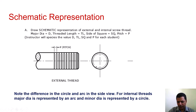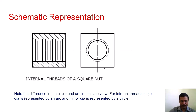The side view is the same as for the simplified representation: the outer circle is complete with a diameter equal to the major diameter, and the inside one is an arc with a diameter equal to the minor diameter. You can place the opening of the arc in any quarter.